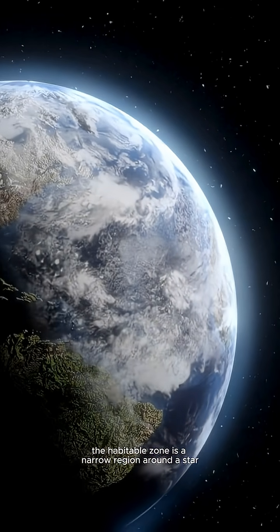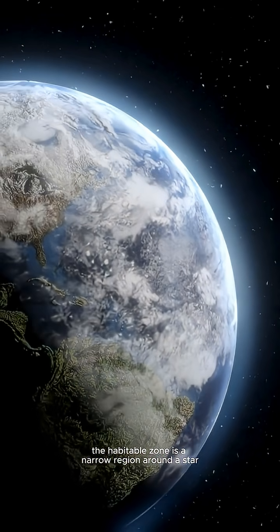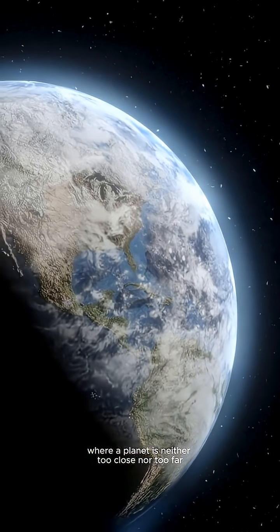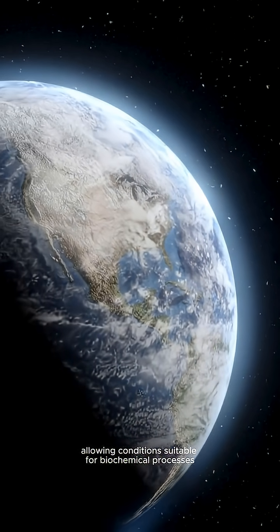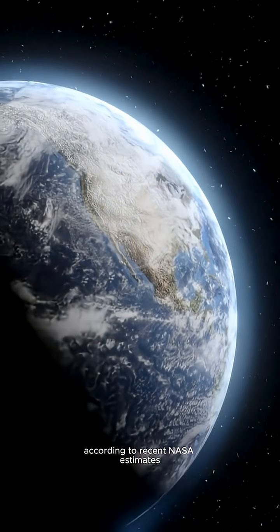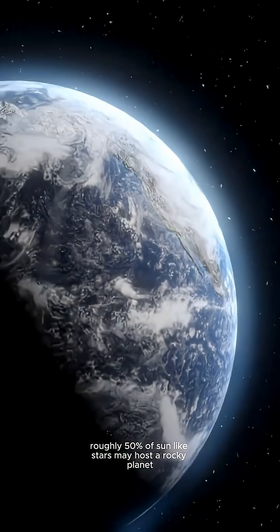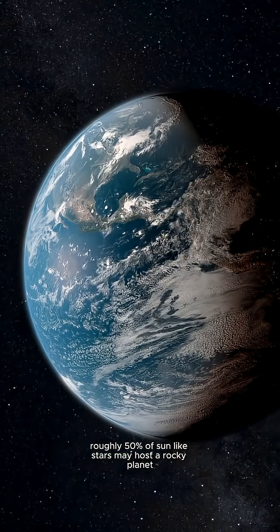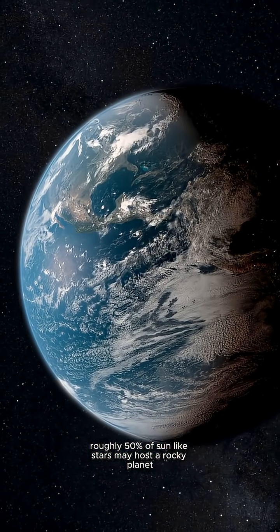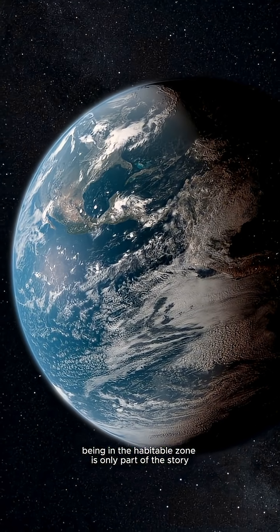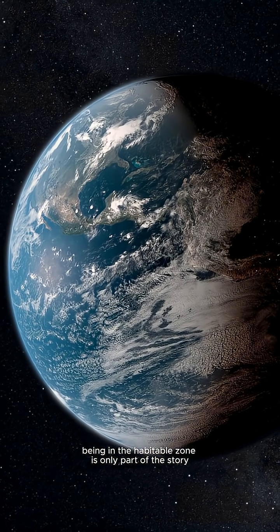The habitable zone is a narrow region around a star where a planet is neither too close nor too far, allowing conditions suitable for biochemical processes. According to recent NASA estimates, roughly 50% of sun-like stars may host a rocky planet capable of supporting liquid water, but being in the habitable zone is only part of the story.